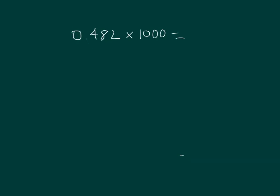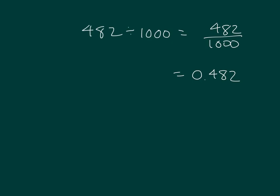482 thousandths times a thousand. Well, that would just be 482. So our digits would get shifted over 3 places. 482 thousandths, 482 divided by 1,000. Well, we could rewrite it as this. And written as a decimal is 482 thousandths.